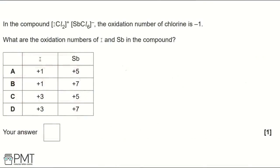In the compound ICl₂⁺SbCl₆⁻, the oxidation number of chlorine is −1. What are the oxidation numbers of I and Sb? Option A: I is +1 and Sb is +5. B: I is +1 and Sb is +7. C: I is +3 and Sb is +5.